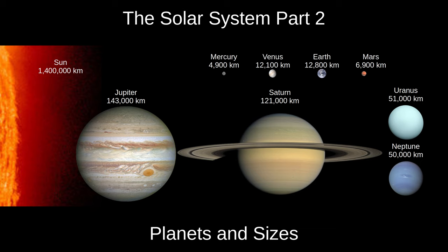Hello, and welcome to Astronomy with Mr Gerin. This is part two of a four-part series on the solar system. If you haven't already, I recommend you watch part one first. In this video, we'll look at the planets and dwarf planets, as well as the size of the solar system. We'll then consider some of the most distant parts of the solar system: the Kuiper belt, the Oort cloud, and finally the heliosphere.